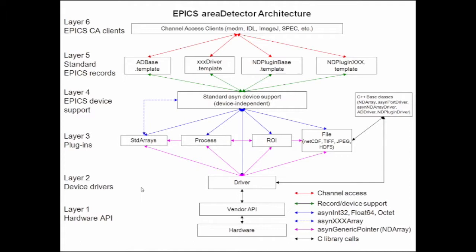EPICS version 4 has the ability to put structured data on the network where an NDArray can be properly described as an atomic object. In V3, there's a potential issue: if you have a PV for NX and NY and here's the data, what's the order in which those update so you're sure it's a consistent set? In practice it hasn't proven to be a problem, but it's certainly not a clean solution.